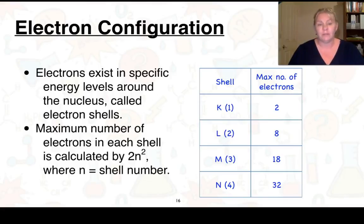Now what about the electrons? Electrons exist in specific energy levels around the nucleus, and that's called an electron shell. There's a maximum number of electrons that can fit within each shell. The formula we use is 2n², you'll need to remember that one. n is our shell number.